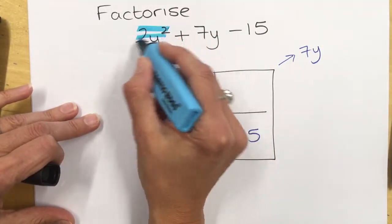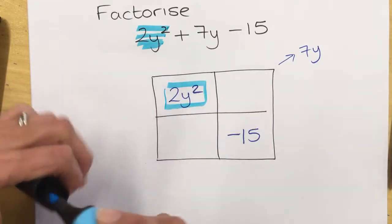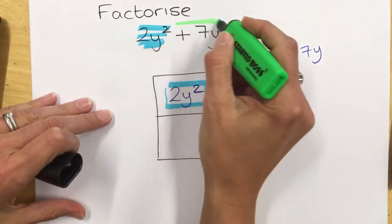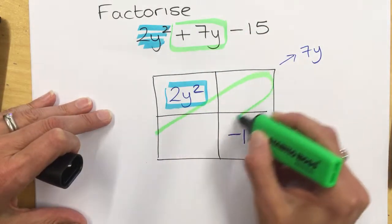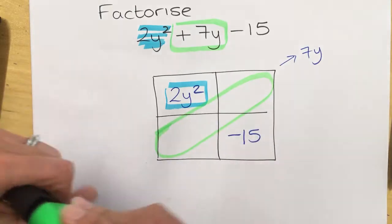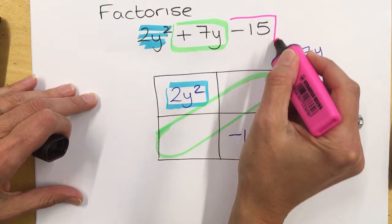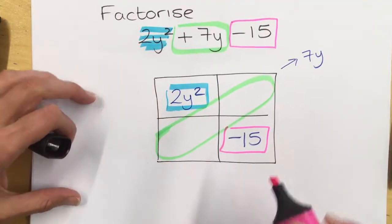we have the 2y squared with the 2y squared here. We have the 7y, which is these two added together. And we have the constant term, which is here.